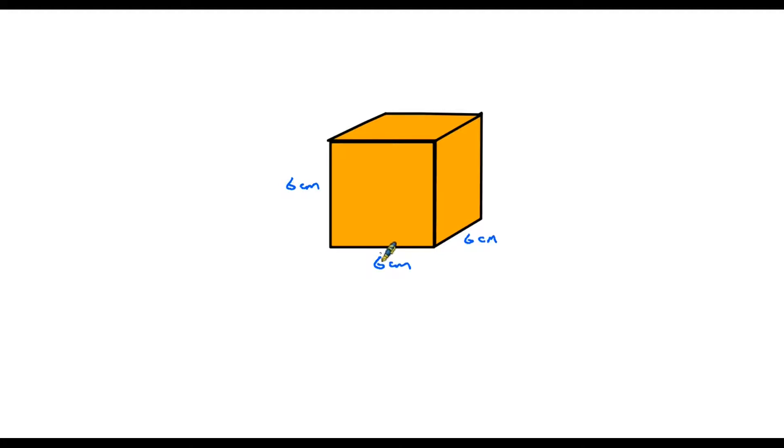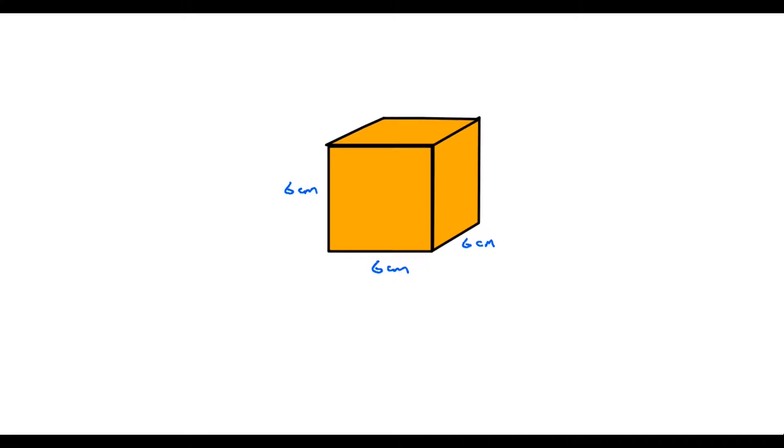Now the definition of a net is that it is simply a three-dimensional shape such as this one that has actually been opened out and folded out flat. This is a topic therefore that needs a little bit of imagination because you have to look at the shape and imagine what it would be like if you were to unfold it.